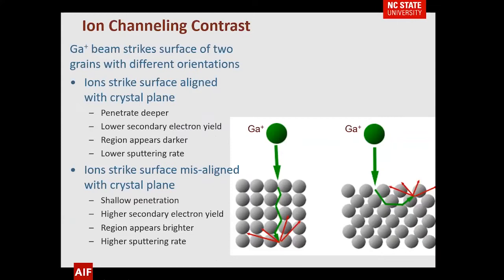Ion channeling contrast is a very useful feature with a FIB. Imagine your gallium beam striking the surface of two grains with different crystalline orientations. On the left, the gallium beam is aligned with the particular atoms — the secondary electrons that come off are from somewhat deeper in the material. On the right, the gallium beam hits a misaligned crystal plane, and secondary electrons are closer to the surface.